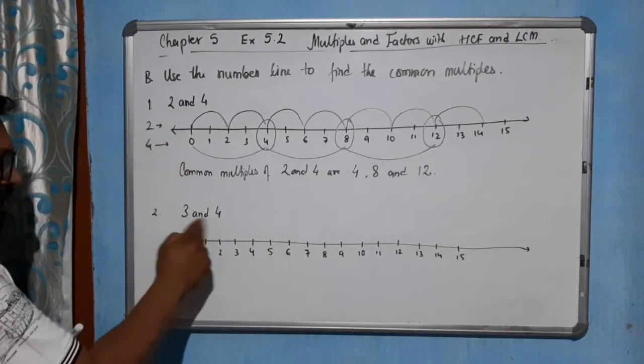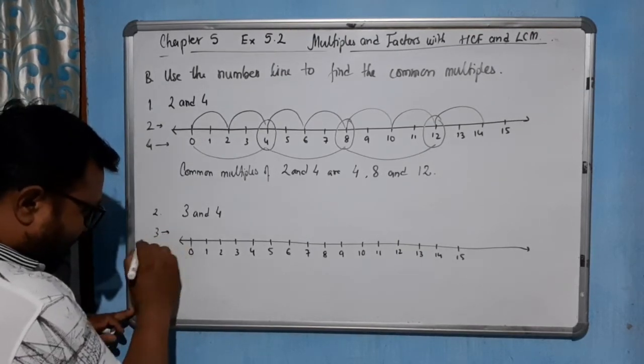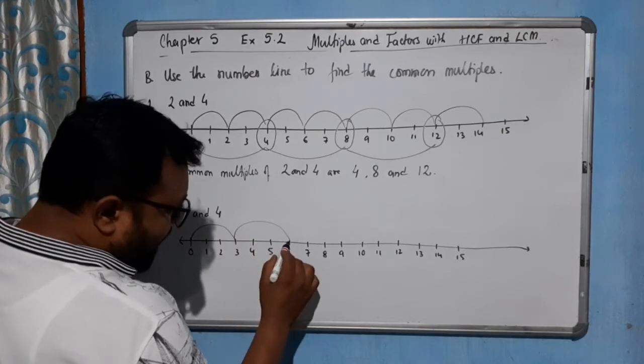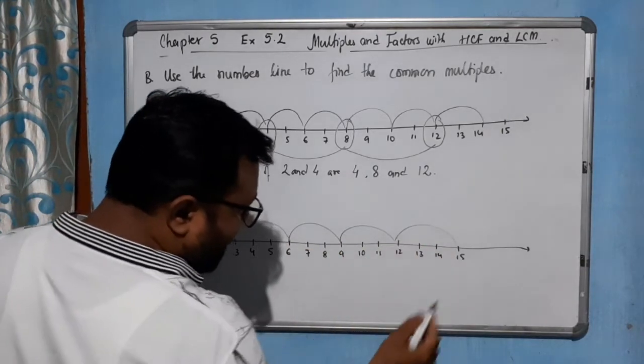Now, come to 3 and 4. So let's try to find for 3. Upper part for 3. So 3×1=3, 3×2=6, 3×3=9, 3×4=12, 3×5=15.